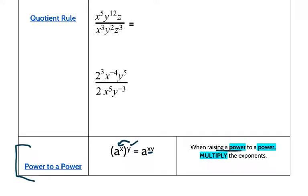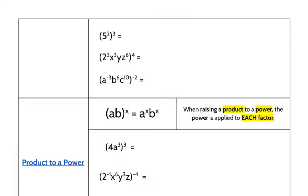When raising a power to a power, I like to say inside, outside — inside parentheses, outside parentheses — you multiply exponents. Let's look at some examples. I've got 5 to the 2nd raised to the exponent of 3. I'm going to take my base and multiply my exponents: 2 times 3 is 6. That's it.